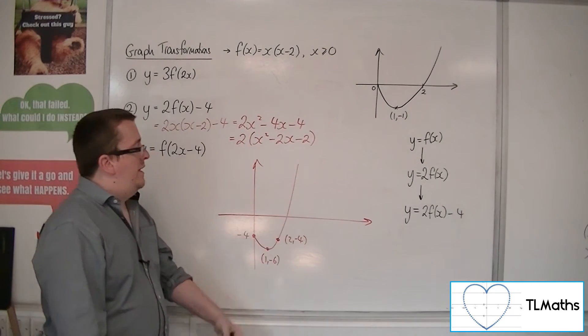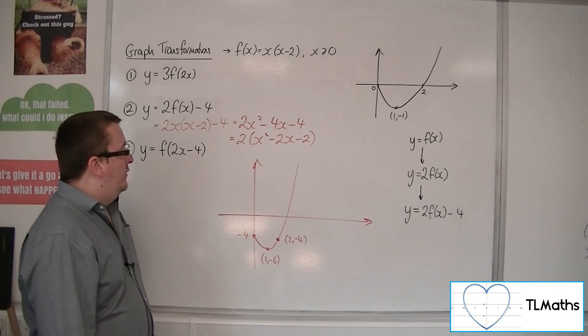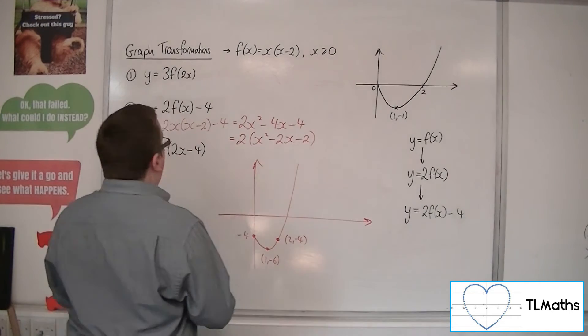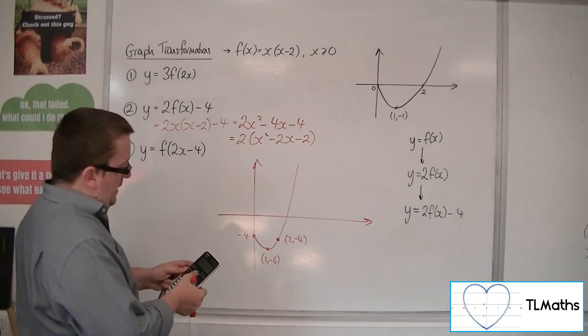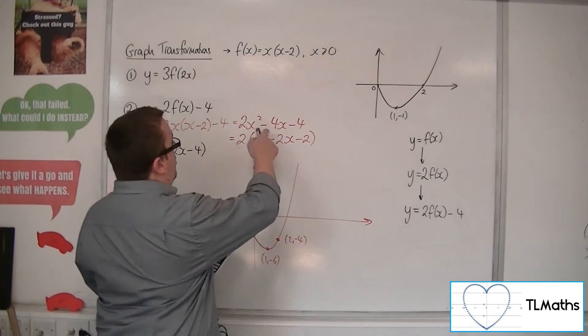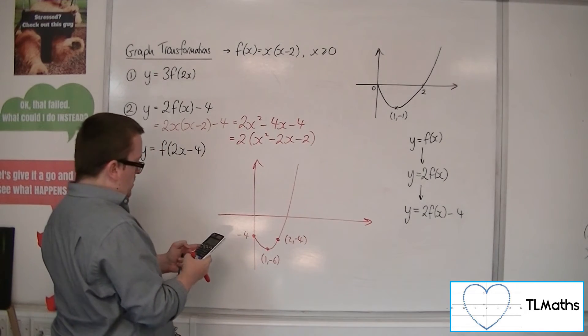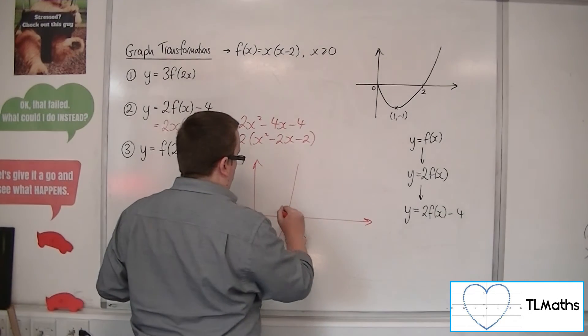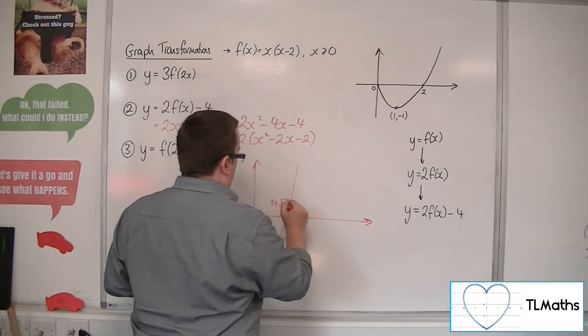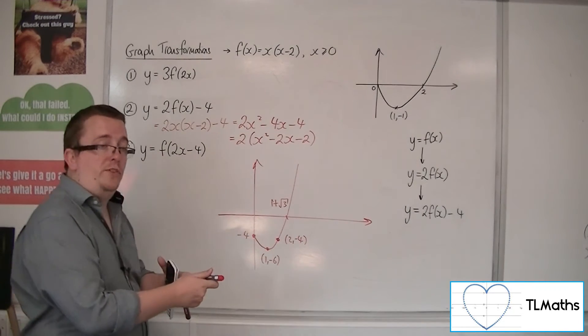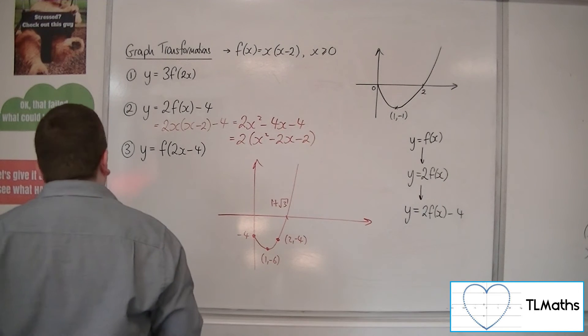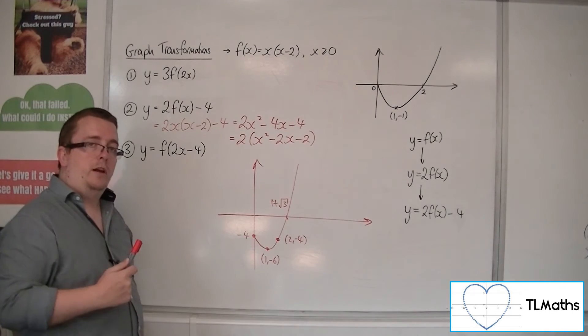We could work out where this graph crosses the x-axis if we wanted to by solving that quadratic. If I substitute that into my calculator, we get 1 plus root 3. The 1 minus root 3 is that point over there, I'm not interested in that. That point doesn't exist for me. So that is a sketch of what number 2 would look like.